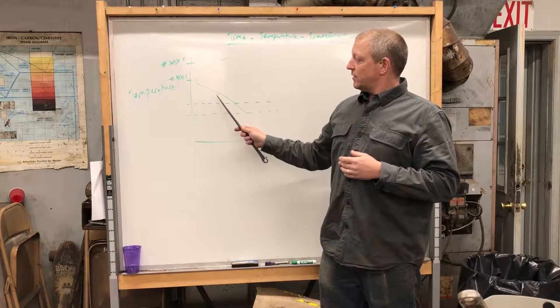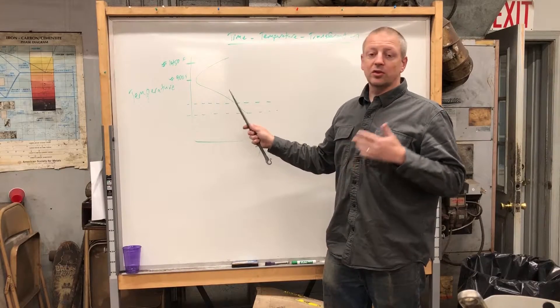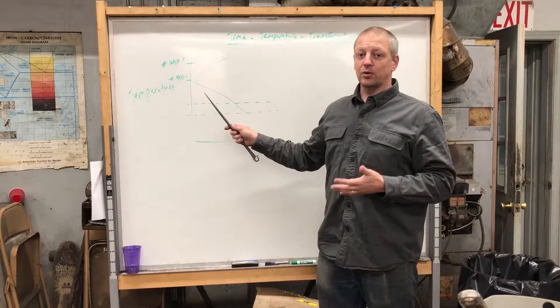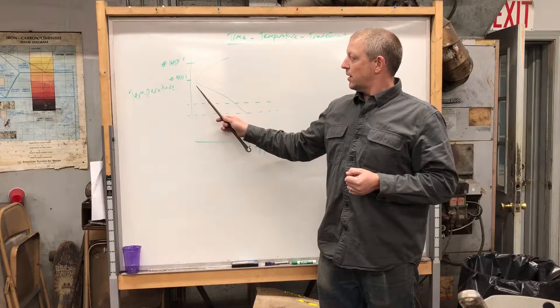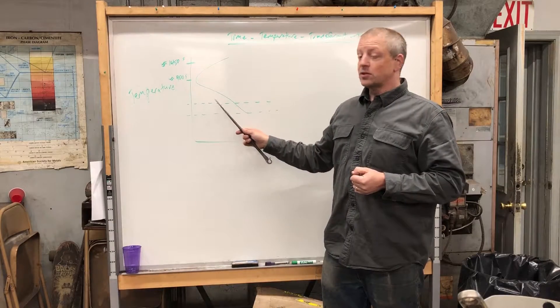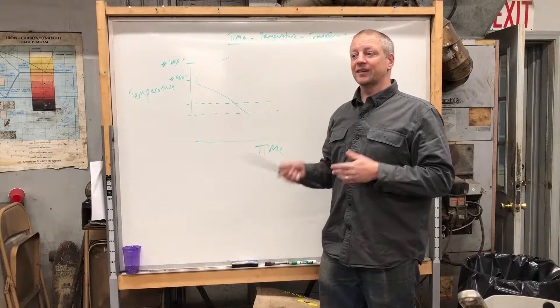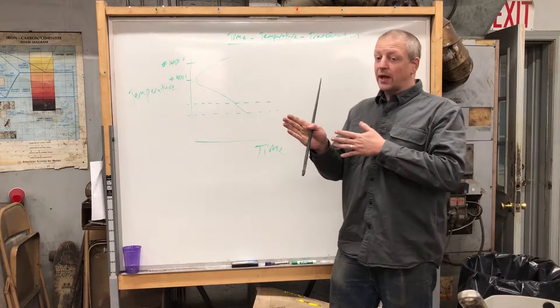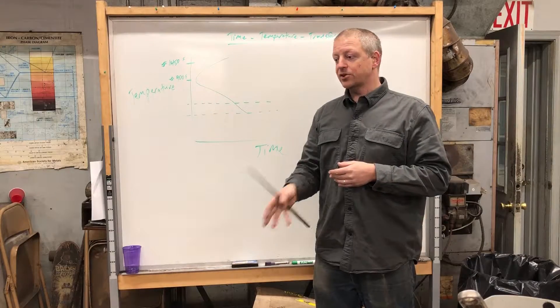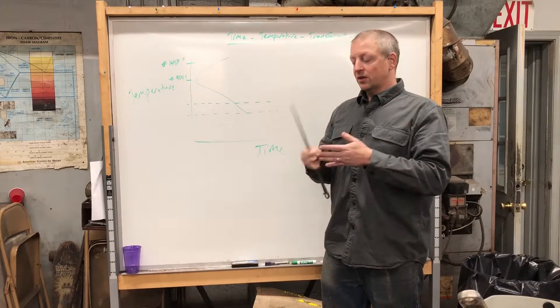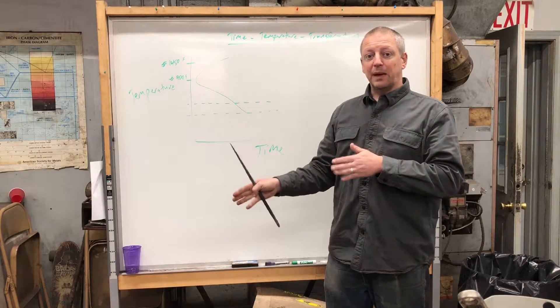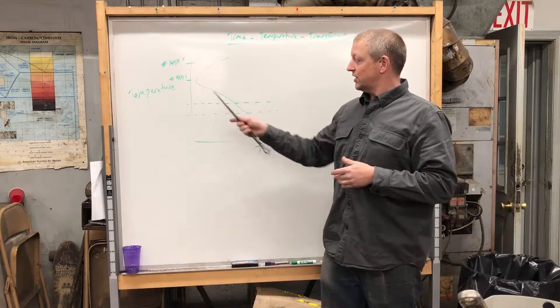Now you've got this window of opportunity here during which you can essentially air cool the steel. The steel has not yet transformed to martensite—it's actually quite soft. You can make adjustments now if that initial quench was a little uneven and your blade has bent. Well, in this range...